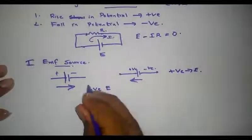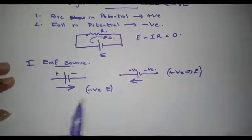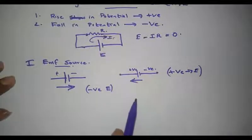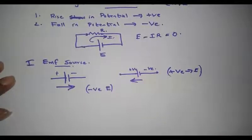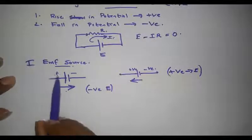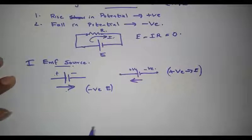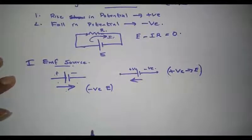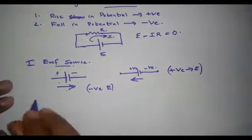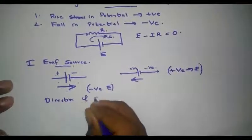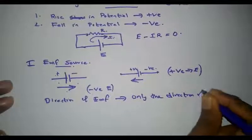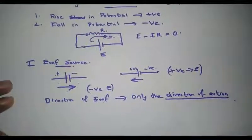These are the two conditions to be considered. If writing equations from negative to positive terminal, there is a rise in potential and a positive sign is assigned to the EMF source. If writing from positive to negative terminal, there is a fall in potential and a negative sign is assigned. Therefore, the sign of an EMF source depends only on the direction of action — the direction in which we are writing the equation.